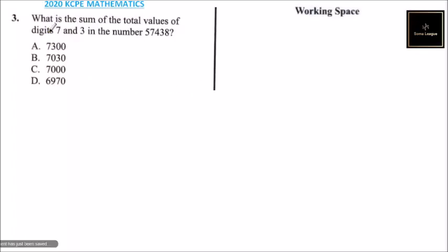Question number three: What is the sum of the total values of digits 7 and 3 in the number 57438? We can write our number here: 57,438 (fifty-seven thousand, four hundred and thirty-eight).